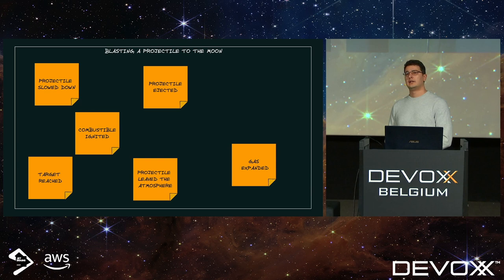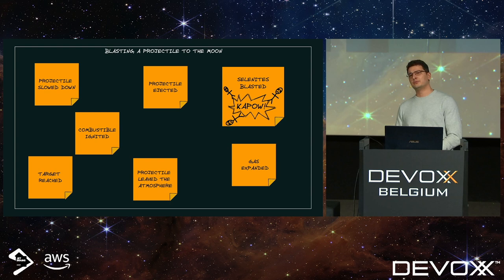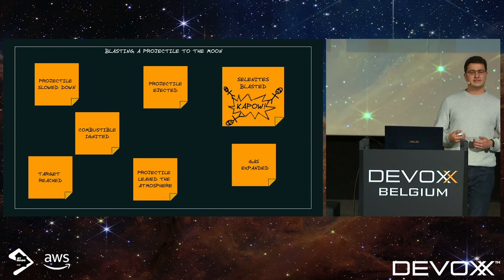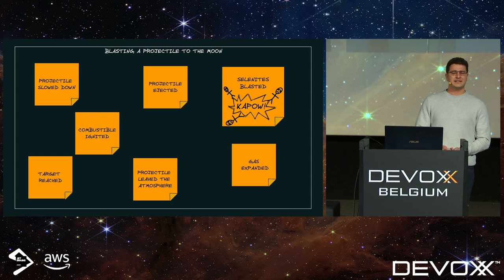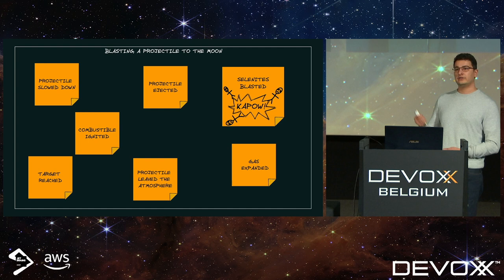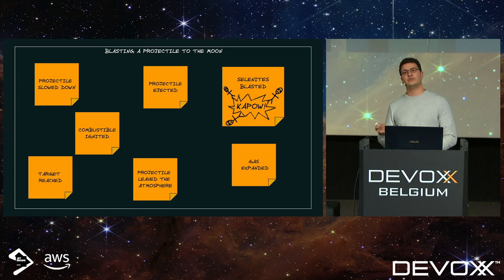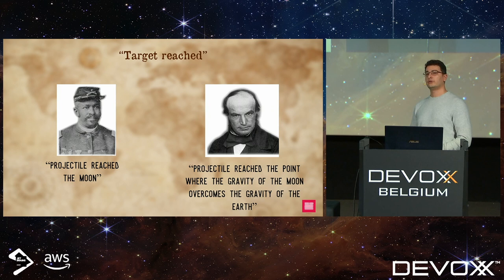We start seeing a problem — a sticky note we don't truly understand. Let's discuss it. Who are the Selenites? The inhabitants of the moon. When will they be blasted? When we reach the target. The astronomer disagrees. We start understanding that the astronomer didn't mean the moon when he said 'target reached' — this is the true source of our misunderstanding. For the gunner, 'target reached' meant the projectile reached the moon. For the astronomer, it meant the projectile reached the point where the gravity of the moon overcomes the gravity of the earth.